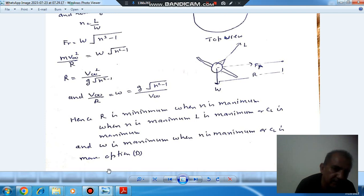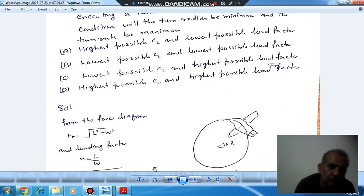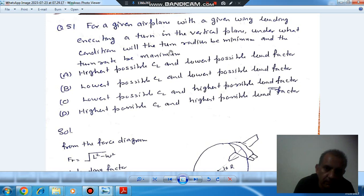Therefore, the radius will be minimum and turn rate will be maximum when there is the highest possible CL.